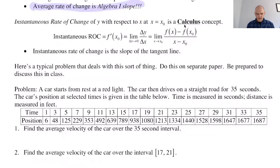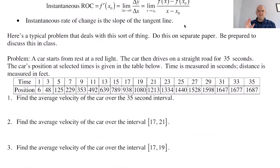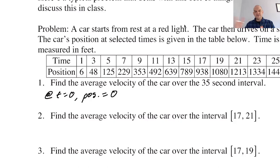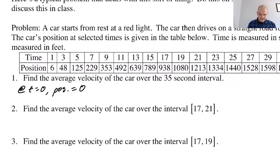Here's the problem: a car starts from rest at a red light and drives on a straight road for 35 seconds. The car's position at select times is given in a table — time in seconds, distance in feet. The first question asks for average velocity over the 35-second interval. I'll assume that at t equals 0 the position is also 0. Average velocity is the average rate of change of position.